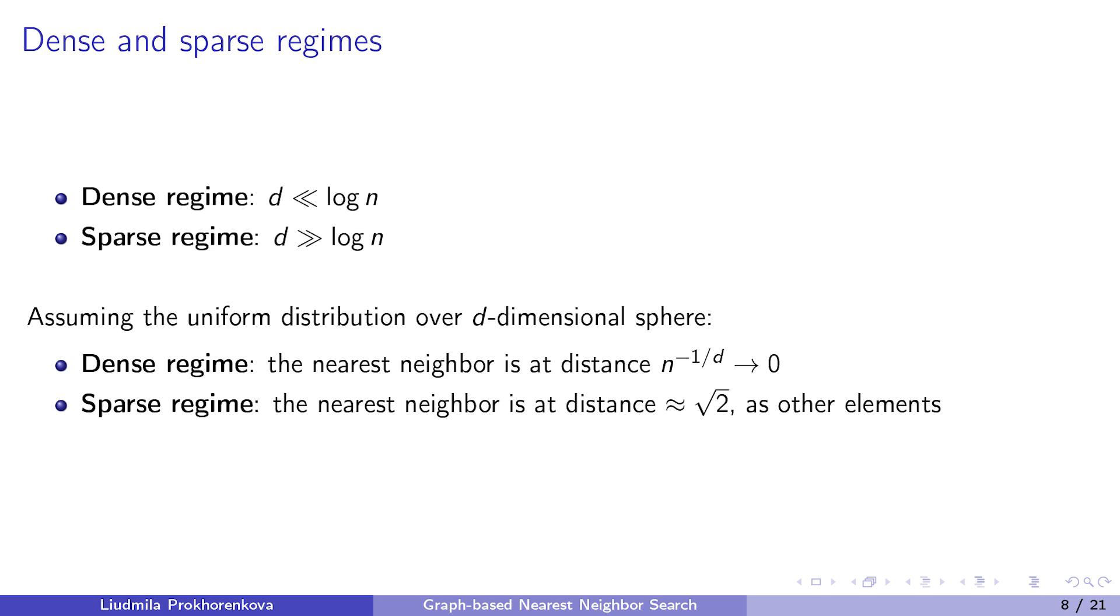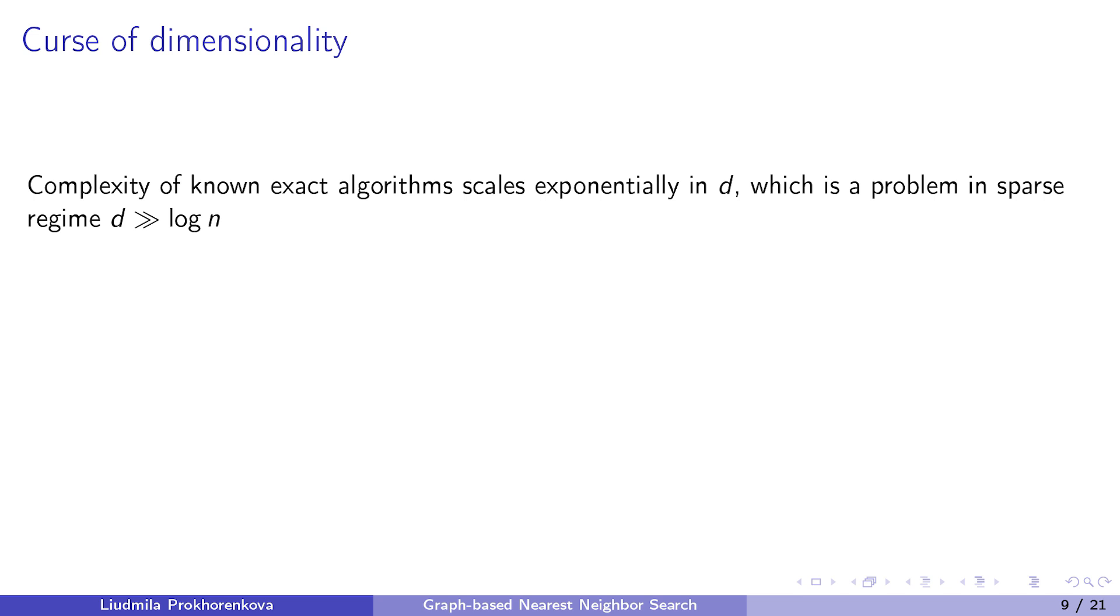In contrast, in the sparse regime, this distance is about the square root of 2. And actually, the distance between any two elements is about the square root of 2. That is why the exact nearest neighbor search is so difficult in the sparse regime. Actually, the complexity of known exact algorithms scales exponentially in dimension, which is a problem in the sparse regime. Hence, in this regime, the problem is often relaxed to c-approximate nearest neighbor, where we are allowed to return any element at distance at most c times larger than the distance to the nearest neighbor.